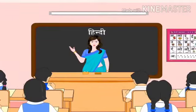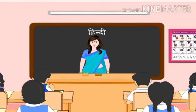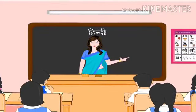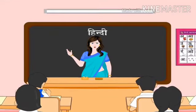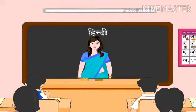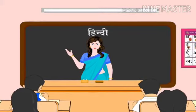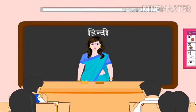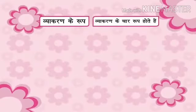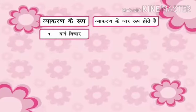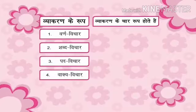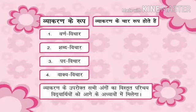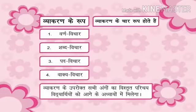Vyakaran: Vyakaran hi vah shastra hai jo bhasha ke shuddh roop ka gyaan pradaan karta hai. Pratyek bhasha ka apna vyakaran hota hai aur apna vyavasthit roop bhi. Kisi bhasha ko niyambaddh karne ke liye uska vyakaran atyavashyak hai. Vyakaran ka adhyayan chaar pramukh staron par kiya jaata hai. Vyakaran ke chaar roop hote hain: 1. Varn vichar, 2. Shabd vichar, 3. Pad vichar, 4. Vakya vichar. Vyakaran ki uprokt sabhi angon ka vistrit parichay vidyarthiyon ko aage ke adhyayon mein milega.